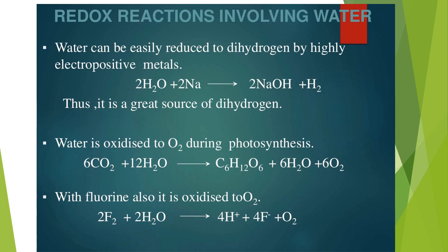Redox reactions involving water: Water can be easily reduced to hydrogen by highly electropositive metals like sodium. 2Na plus 2H2O gives 2NaOH plus H2, and thus it is a great source of dihydrogen. Water is oxidized to O2 during photosynthesis in presence of the green pigment, chlorophyll, in the leaves of the plant. With fluorine, it is also oxidized to O2: 2F2 plus 2H2O gives 4HF plus O2.